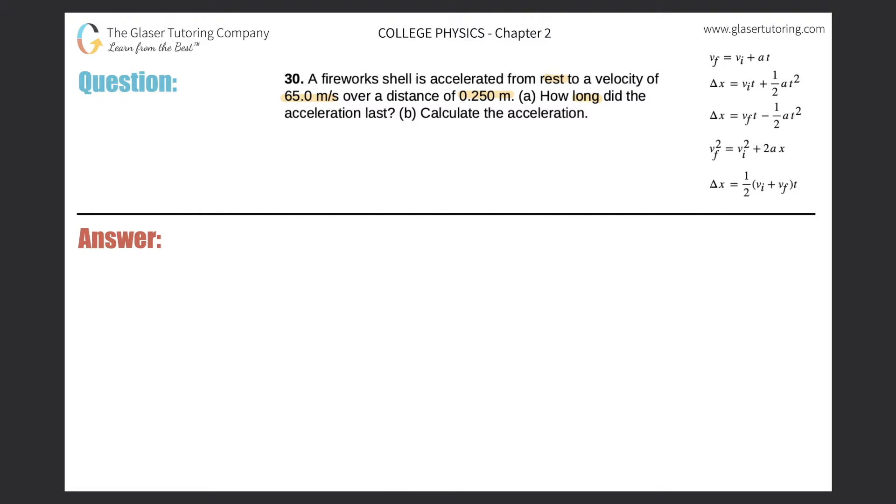Alright, so let's just draw a quick picture here. Here I have a rocket or a firework. It's going to travel upwards. It's going to start at rest, so the starting point here, the initial velocity is going to be 0 meters per second.